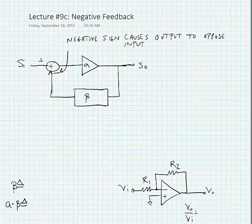I'm going to label this node S_2, and this node is going to be beta times S_out. So we have first of all that S_out is equal to A times S_2,